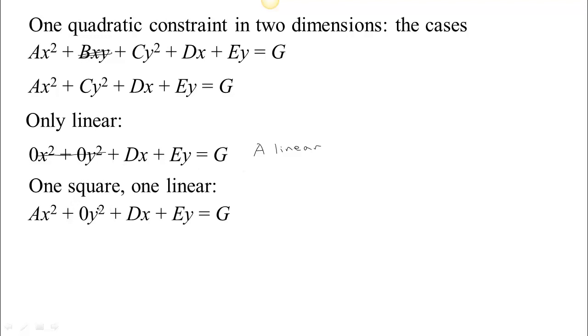If there's only one square, so if one of the coefficients of one of the squared variables is zero, then we can ignore that. And then this term could always be, we could always complete the square, so we might as well just imagine that that term isn't there if we're just thinking about what are the possible shapes. And you can see that the shape we get in this case with one square is a parabola.